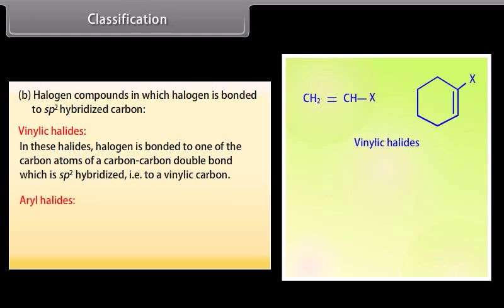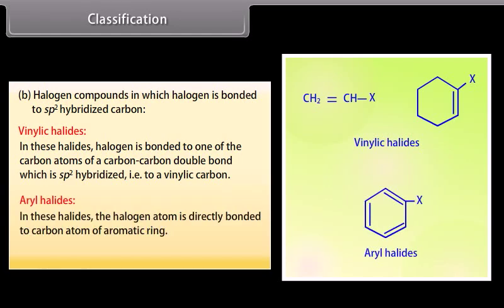Aryl halides. In these halides, the halogen atom is directly bonded to carbon atom of the aromatic ring. For example, halobenzene.